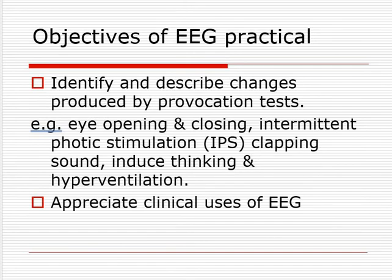Another objective is to identify and describe the changes produced by the provocation test. In the provocation test, a person is made to lay down on a table or chair and they are given different sounds and different lights — just like a stimulus, as discussed in the previous video.